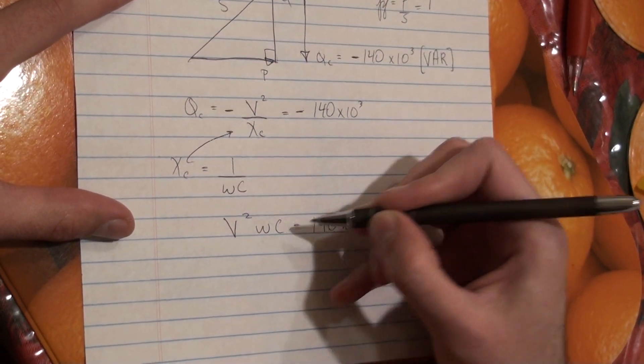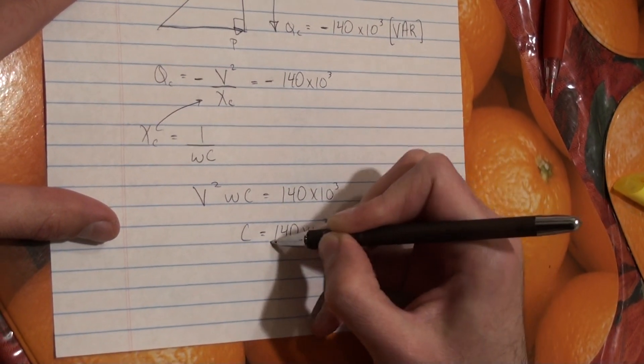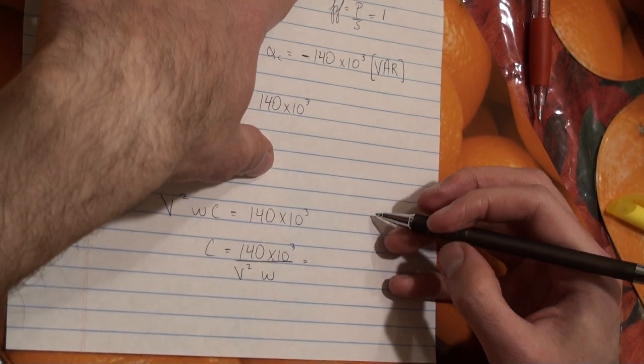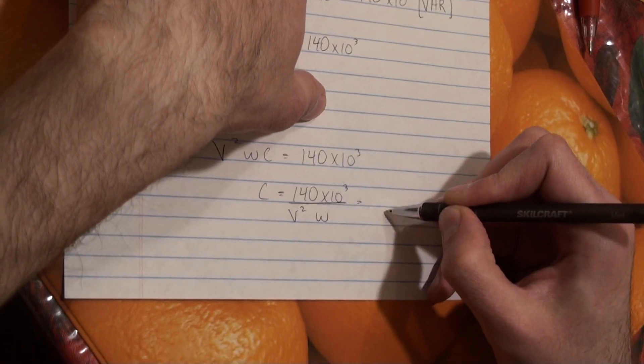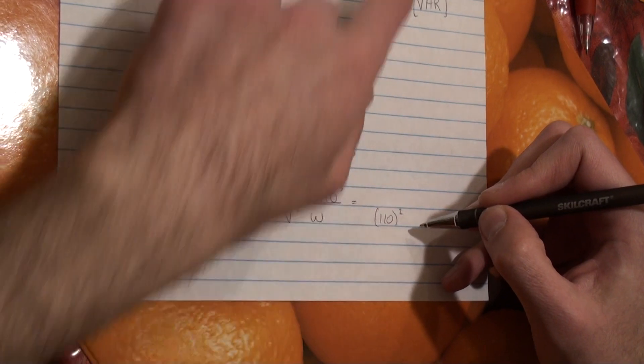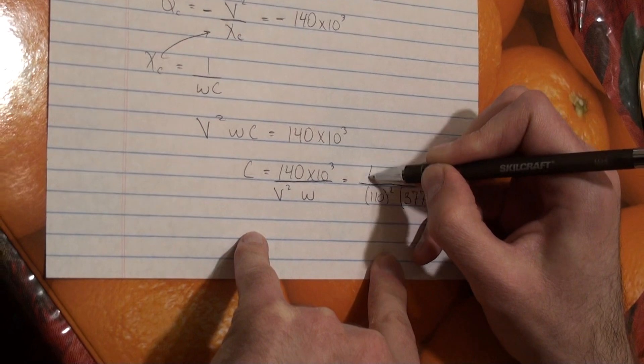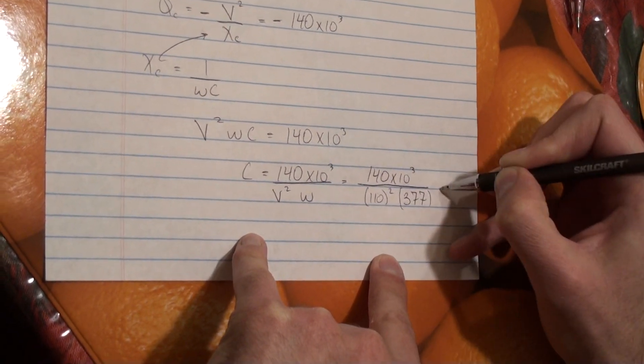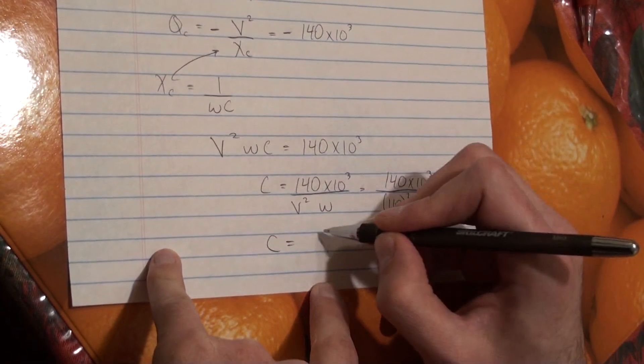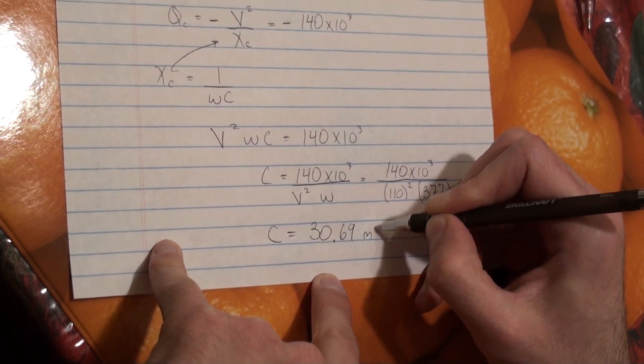We want the value of the capacitance. So C is going to be 140 times 10 to the 3 over V squared omega. Well, we know V squared is given to us in RMS as 110. So it's going to be 110 squared times omega. Well, omega is 2 pi F, F is 60, so that's going to be 377. On the top, we have 140 times 10 to the 3. And we get that the value of the capacitance needs to be 30.69 millifarads.